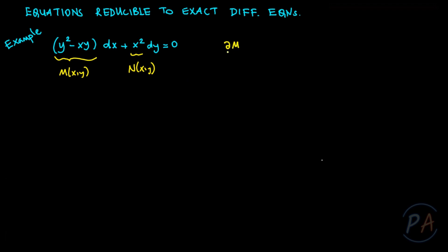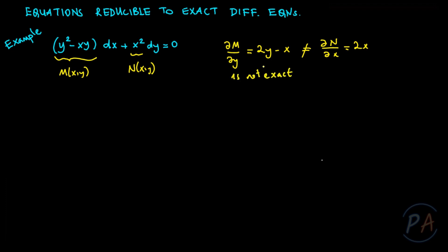The partial derivative of M with respect to y equals 2y minus x, and the partial derivative of N with respect to x is 2x. The condition is not satisfied, which means the given equation is not exact.